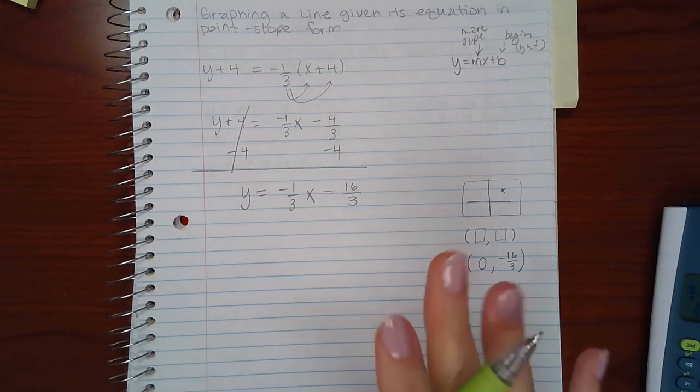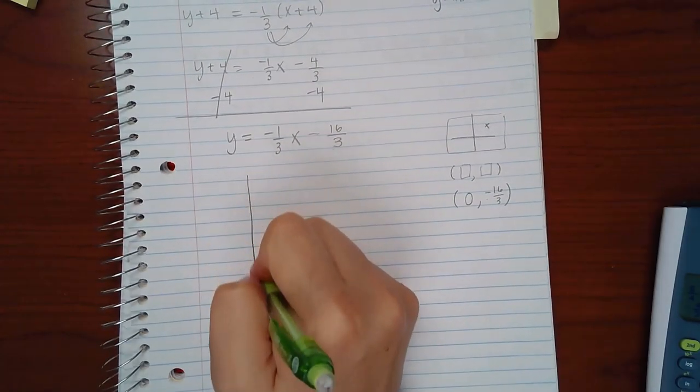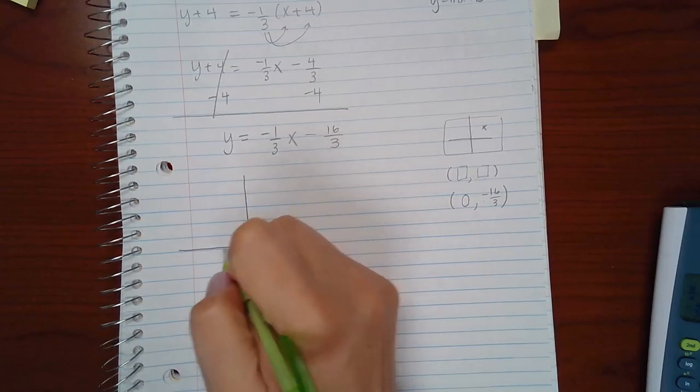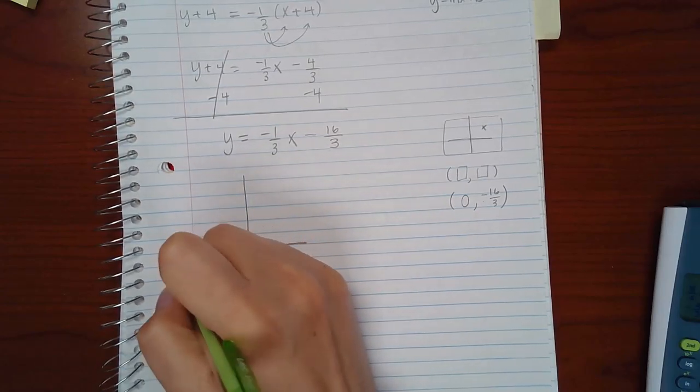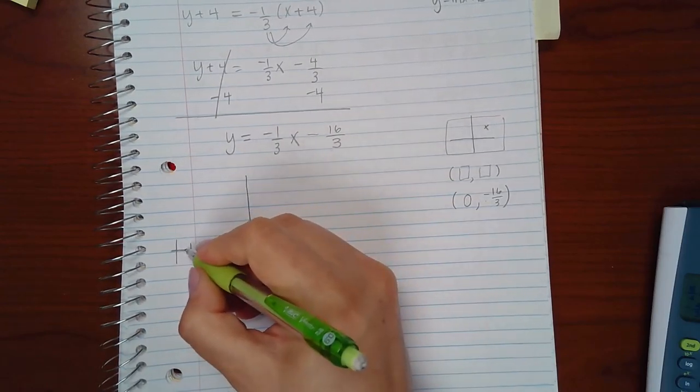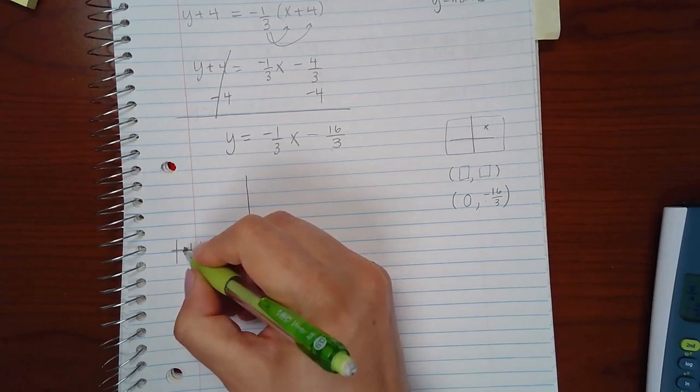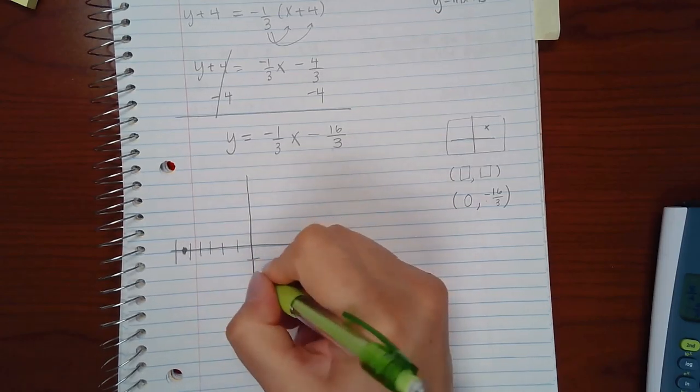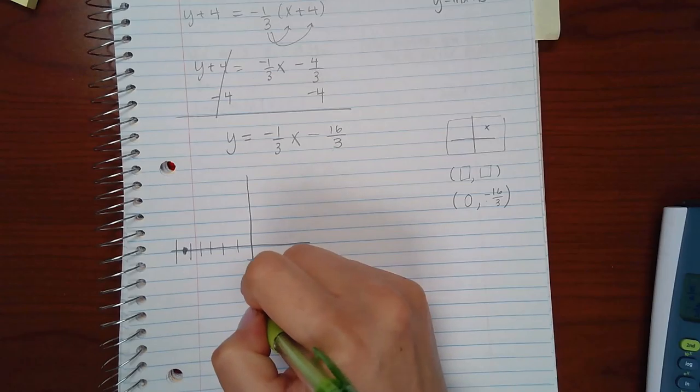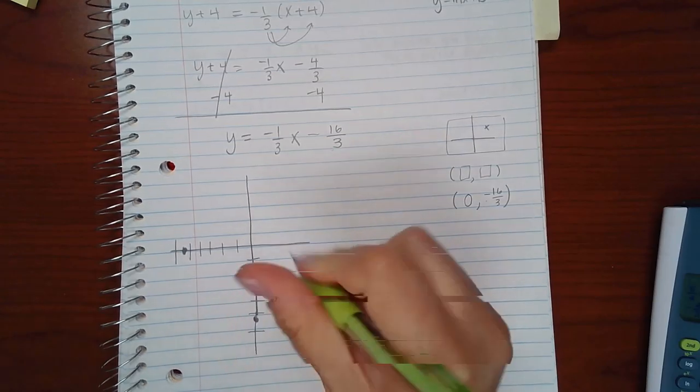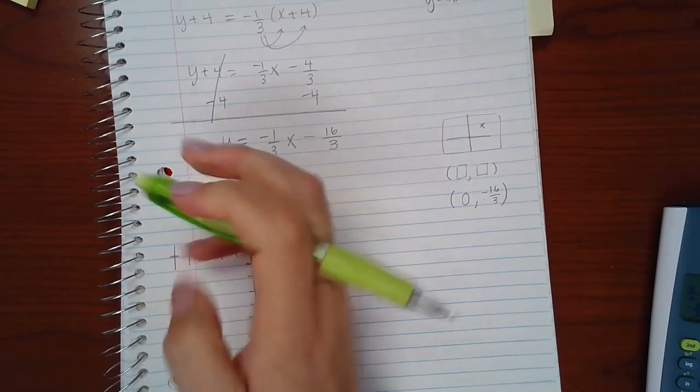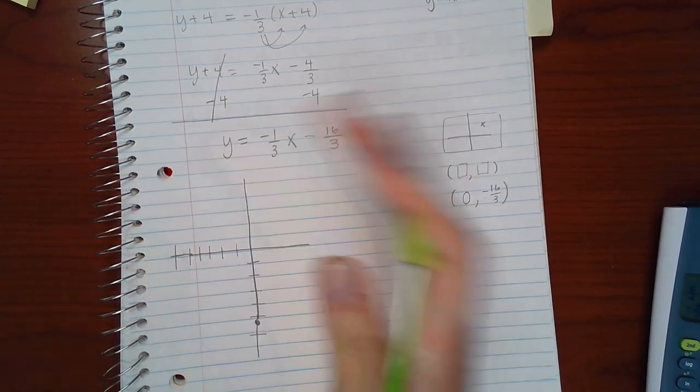Now that will plot that spot. So if I talk about that, that's negative 1, 2, 3, 4, 5, 6. That's going to be about right here. Oh no, I'm sorry. 1, 2, 3, 4, 5, 6. It's actually going to be about right here because it's a y-intercept, not an x-intercept. There we go.